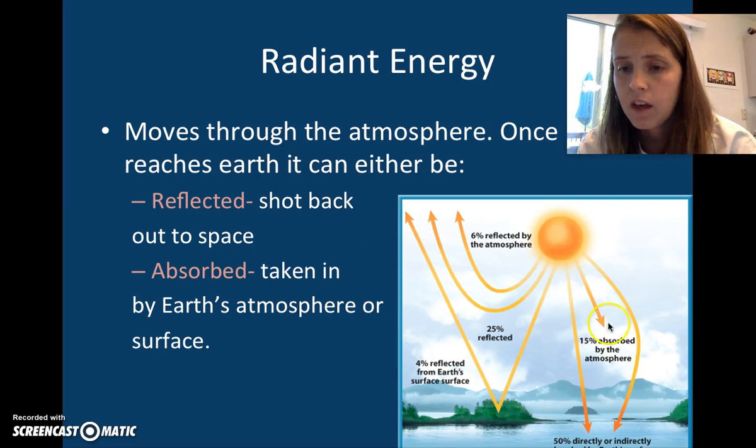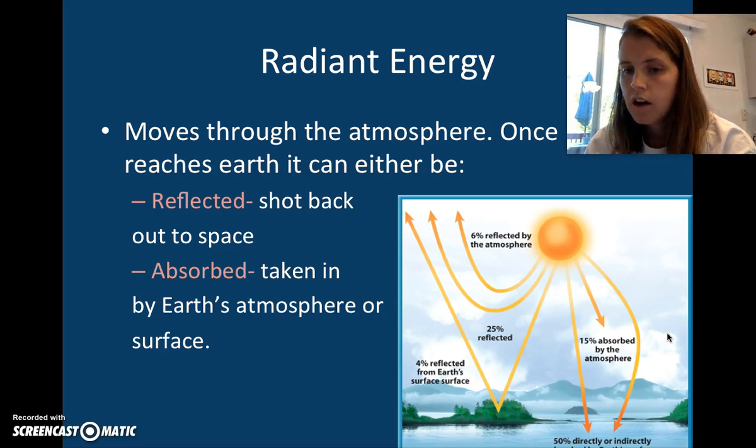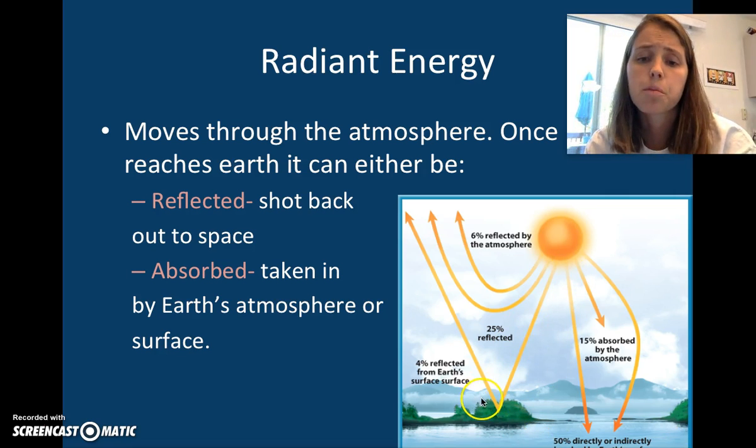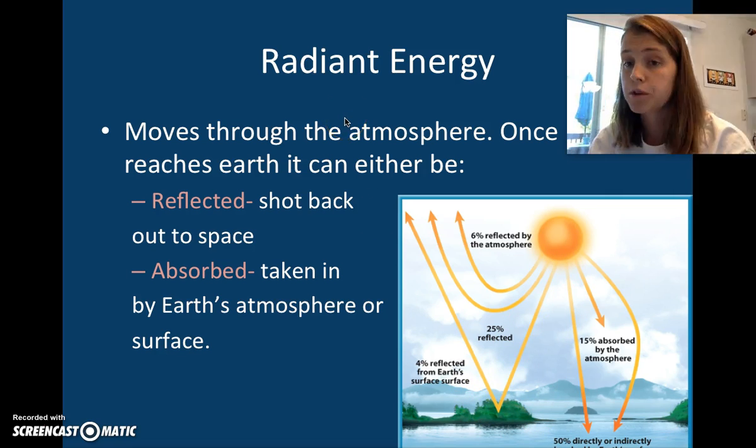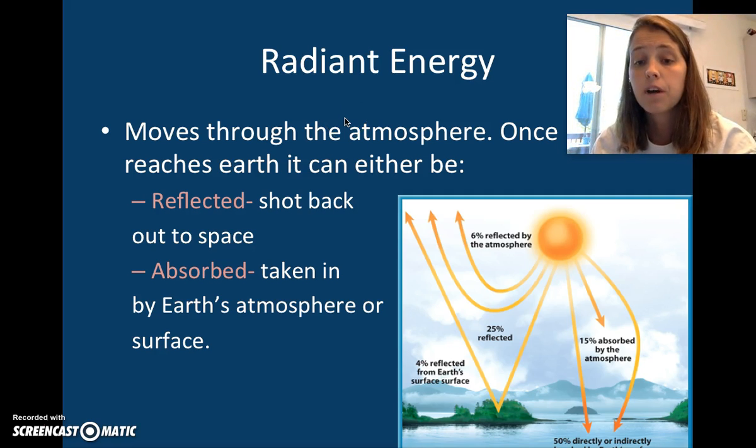Here's the Sun. We're going to get 15% absorbed by the atmosphere, mainly the ozone layer. 50% directly or indirectly absorbed by the surface of the Earth. Then about 4% reflected from the Earth's surface and shot right back out into space. And 25% is just reflected because of the atmosphere—it hits clouds, whatever the case may be, and it can't get in. Then 6% reflected by the atmosphere itself.